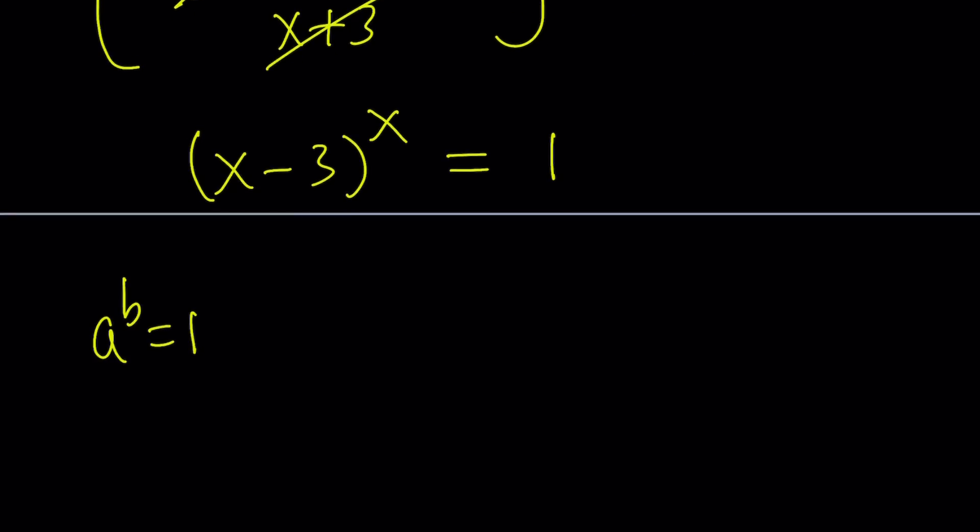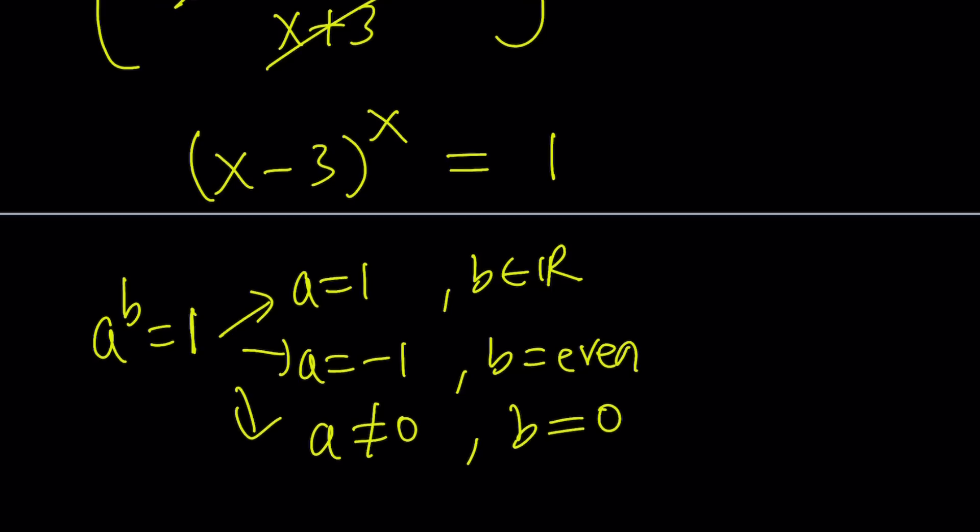So how do we deal with these kinds of equations when you have a to the b equals 1? So there are three cases for real numbers, of course. We can also talk about complex numbers, but let's stick to reals for now. So we can talk about three cases: a is 1, b can be anything pretty much like a real number. a is negative 1, and then b has to be even, an even integer. And then a is not 0, and b is 0. Because when b is 0, we have a to the power of 0 equals 1, as long as we don't have 0 to the power of 0. Make sense? So we have three cases. We're going to look through all these cases.